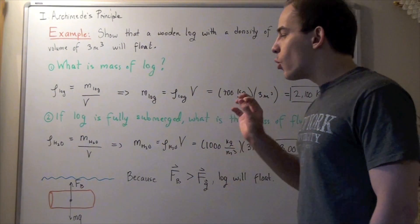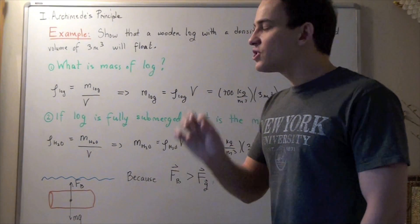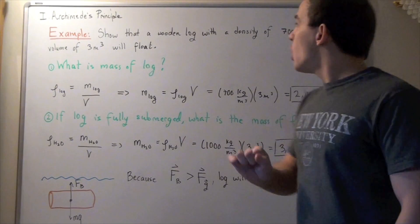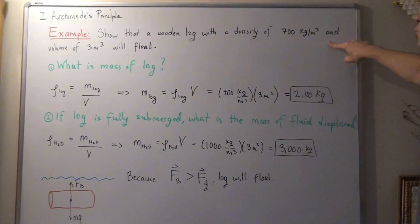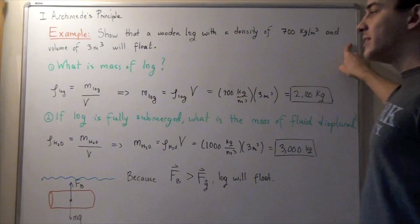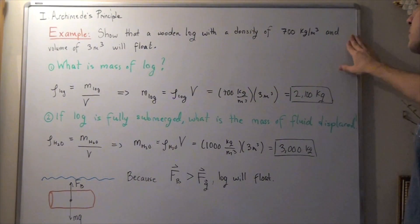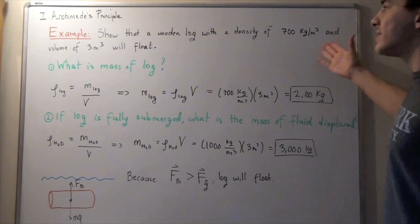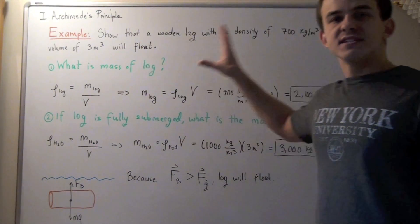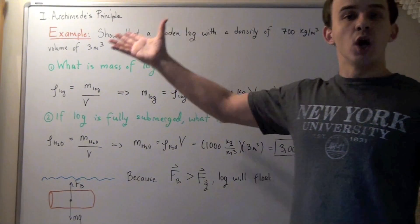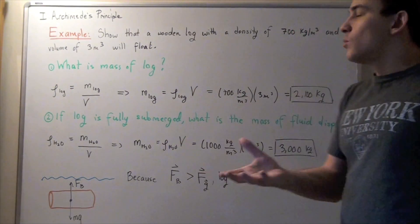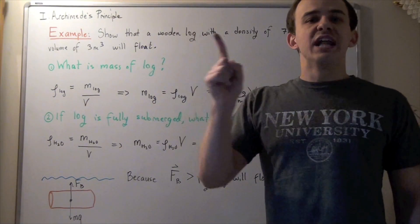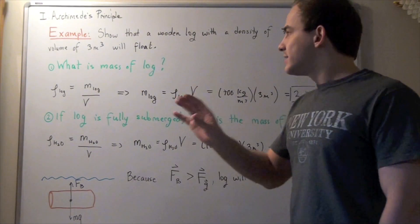Whenever the density of the object is lower than the density of the fluid, that object will float. Our log's density was 700 kilograms per meter cubed, while the density of the fluid is 1000 kilograms per meter cubed. Because the log's density was lower than the fluid's density, it floats. Now if the density was higher — say 1100 kilograms per meter cubed — then that object would sink straight to the bottom.